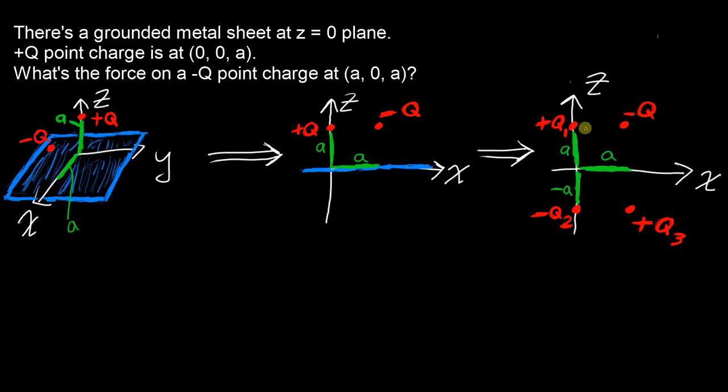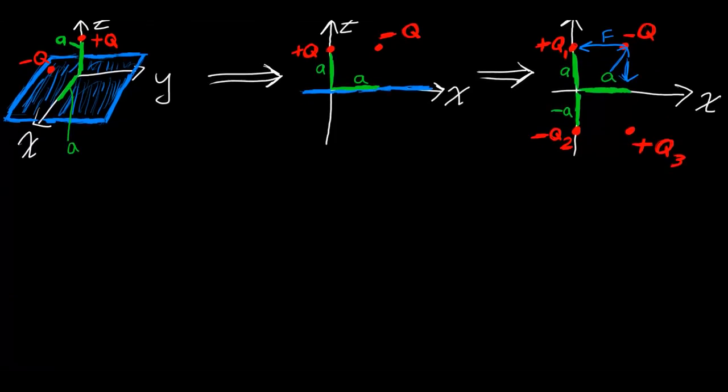Again, our goal is to find the forces on this thing, on this charge here in the upper right. There is a force on Q here due to Q1 that pulls towards Q1 because they're opposite charges. There is a force from Q2 onto Q here that pushes negative Q away because negative Q and negative Q2, they're both negative. And by the same idea, you've got Q3 pulling negative Q here. So we have these three forces here acting on negative Q and we want to find the sum of these forces to see what the total force is on this thing. And that's how you use the method of images.